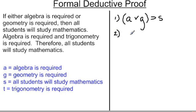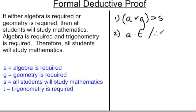Our second statement states that algebra is required and trigonometry is required, so we have our two terms: A and T. And this leads us to our conclusion — therefore, all students will study mathematics, so therefore S. That's basically how we represent our argument. This entire argument breaks down into this symbolic form.